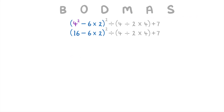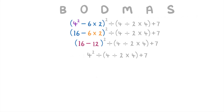There isn't any division in the bracket, so the next thing is the multiplication: 6 times 2 equals 12. Then the only thing left is the subtraction: 16 minus 12 equals 4. We've finished simplifying this first bracket, so we rewrite our equation as 4 squared divided by the bracket (4 divided by 2 times 4) plus 7.